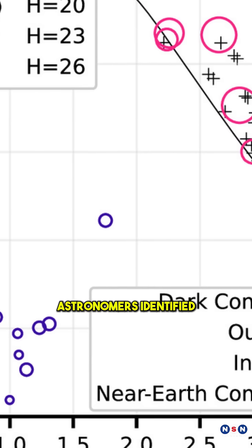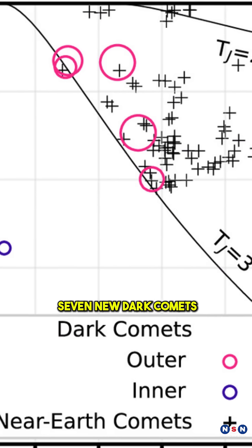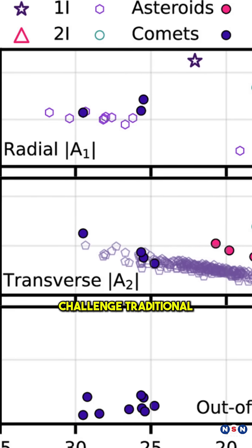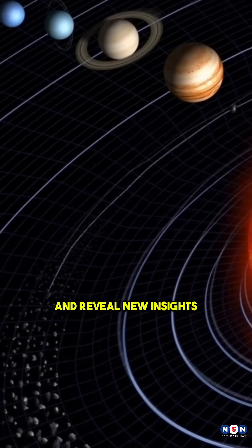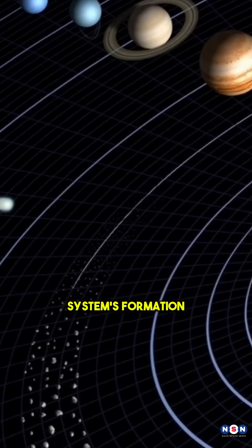Recently, astronomers identified seven new dark comets. These enigmatic objects challenge traditional classifications and reveal new insights into the solar system's formation.